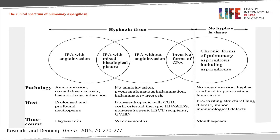To summarize, there is a clinical spectrum where at one end, profoundly immunosuppressed patients can get acute invasive pulmonary aspergillosis with rapid mortality without treatment. In the middle, patients who are somewhat immunosuppressed — with problems such as steroid therapy or diabetes — can have subacute invasive pulmonary aspergillosis. At the other end, chronic pulmonary aspergillosis affects patients classically not thought to be immunosuppressed, but who we now know mostly have subtle defects of innate immunity, with a disease progressing over years and a high mortality at five years.